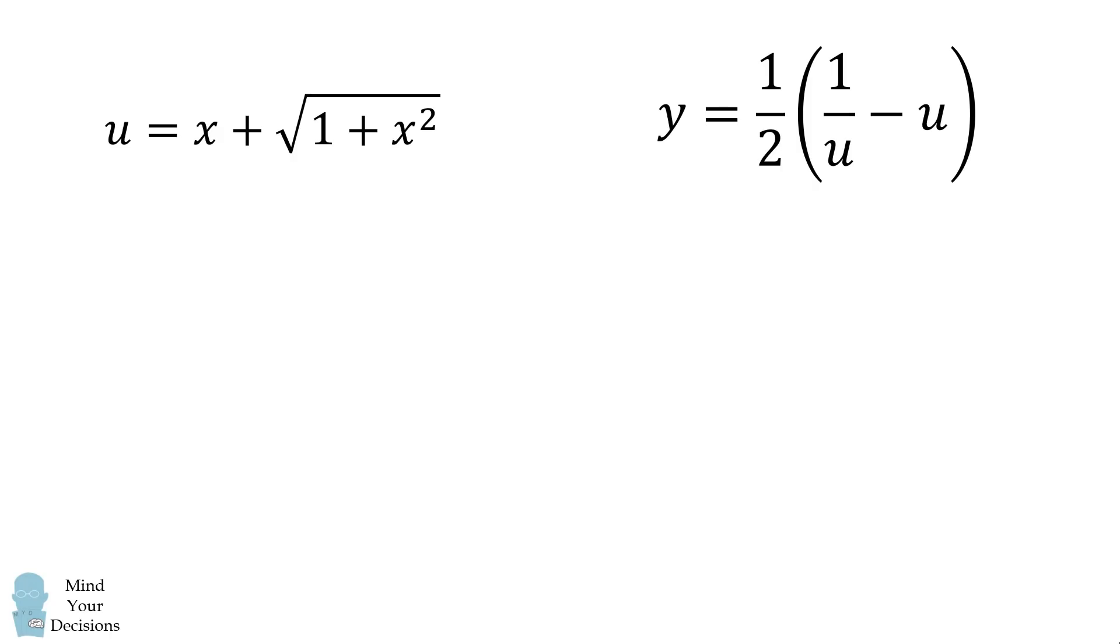Let's simplify this expression. u is equal to x plus the square root of 1 plus x squared. What's its reciprocal equal to? We take its reciprocal and we can do a classic trick.